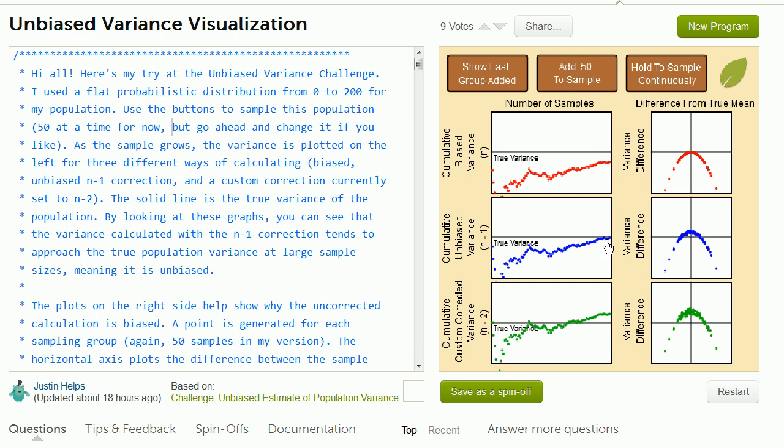When I divide by n minus 1, it looks like I'm getting a pretty good estimate. The mean of all of my sample variances is really converged to the true variance.